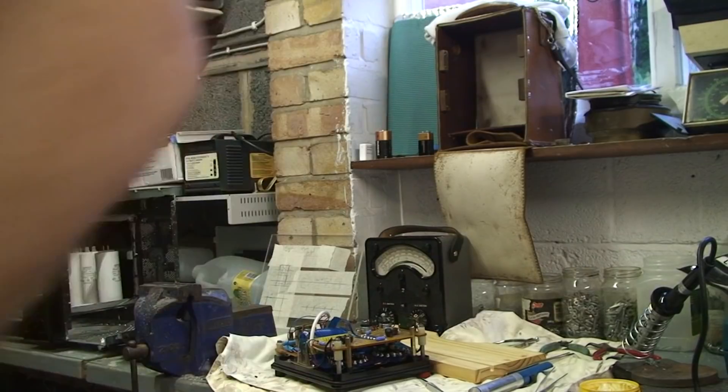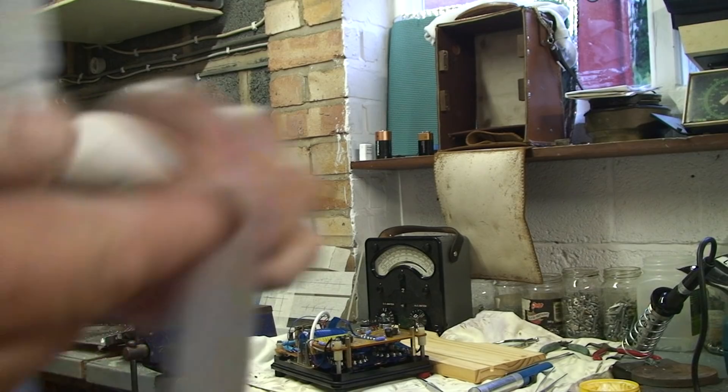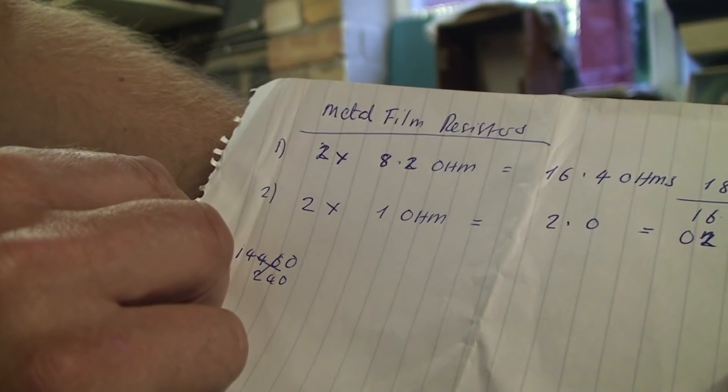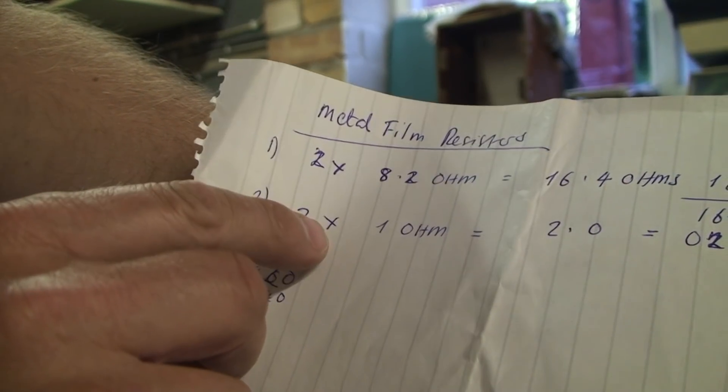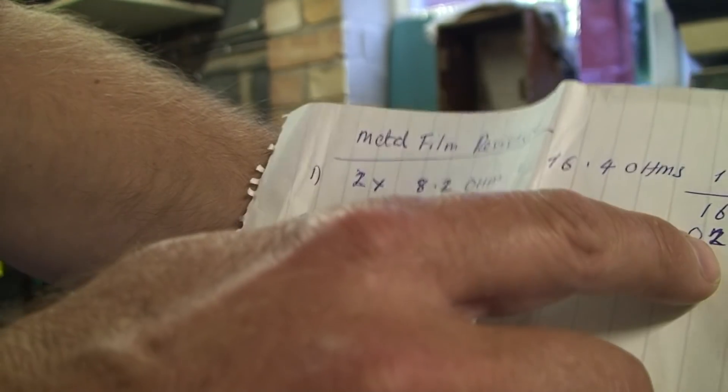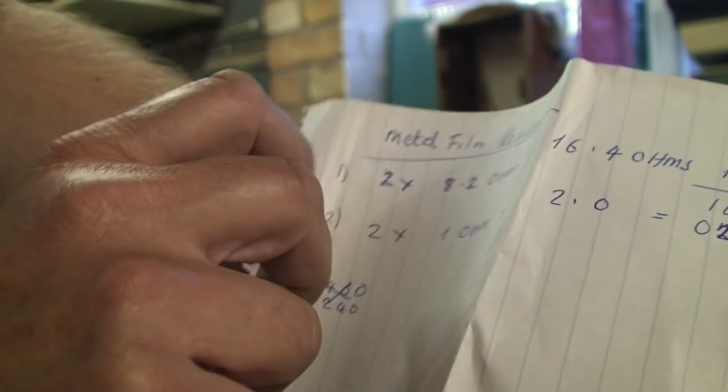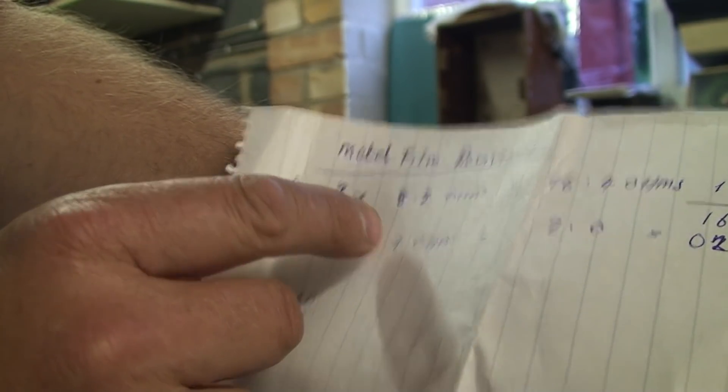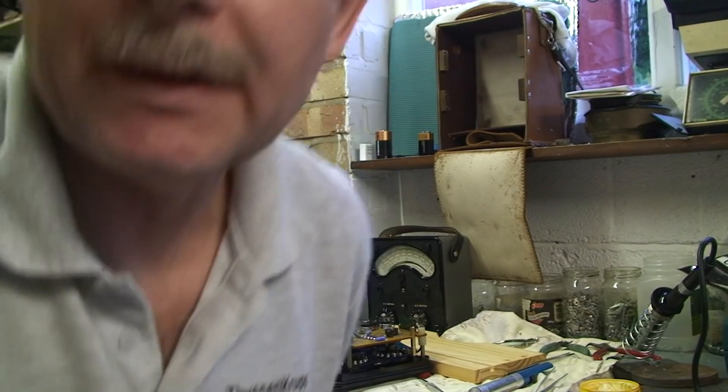If you work it out, what you need is two times 8.2 ohms, that gives you 16.4, and two times one ohm will get you exactly 18.4 ohms. So you don't have to use resistance wire, and I'll show you.